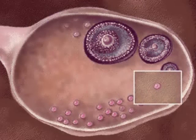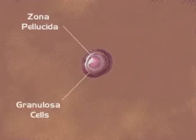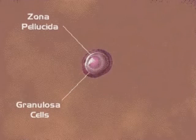The primary follicle houses an oocyte encapsulated by a coating called the zona pellucida. It also contains a layer of granulosa cells that surrounds the oocyte.